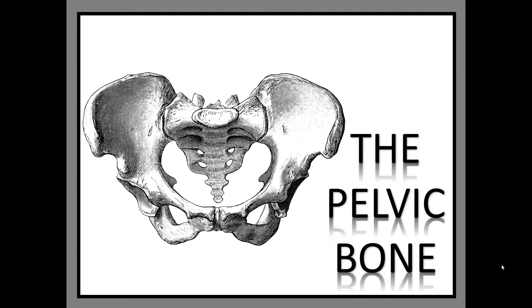Alright forensic students, we are continuing on with our lesson over forensic anthropology. This is lesson three in a four-part series. In lesson one we talked about forensic anthropology and the role of a forensic anthropologist. In lesson two we talked about the human skull and what clues anthropologists can gather for a biological profile. Today our focus is on the pelvic bone and specifically how it can be used to determine the sex of an individual. In lesson four we'll talk about long bones and how they can be used to determine height.